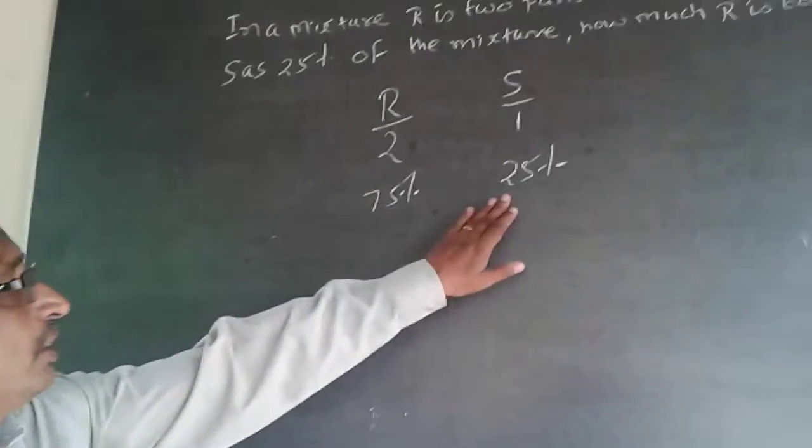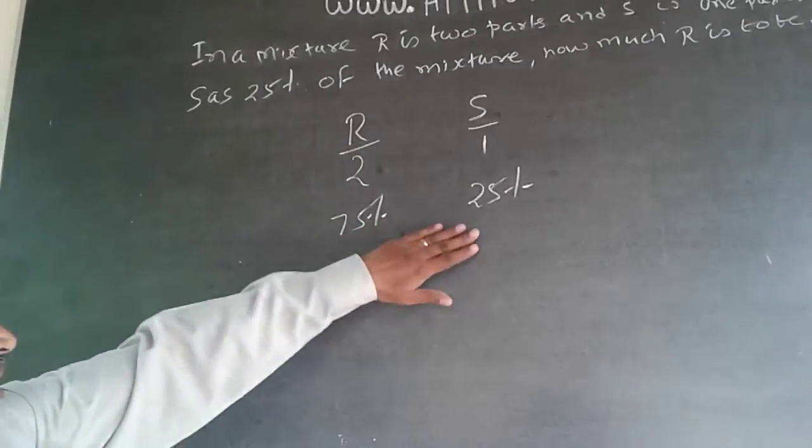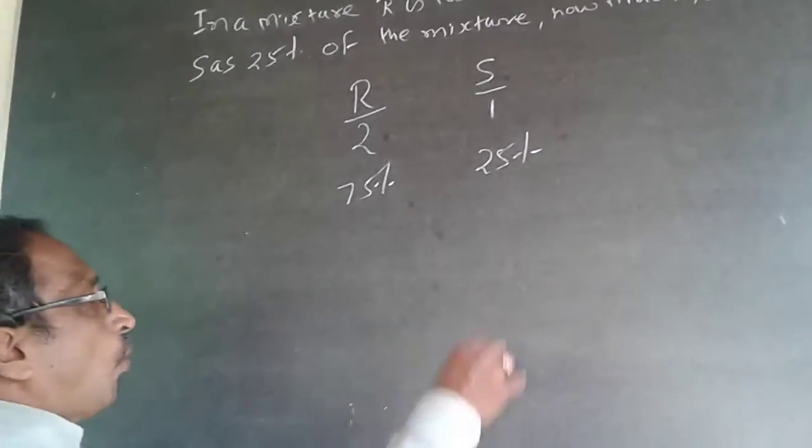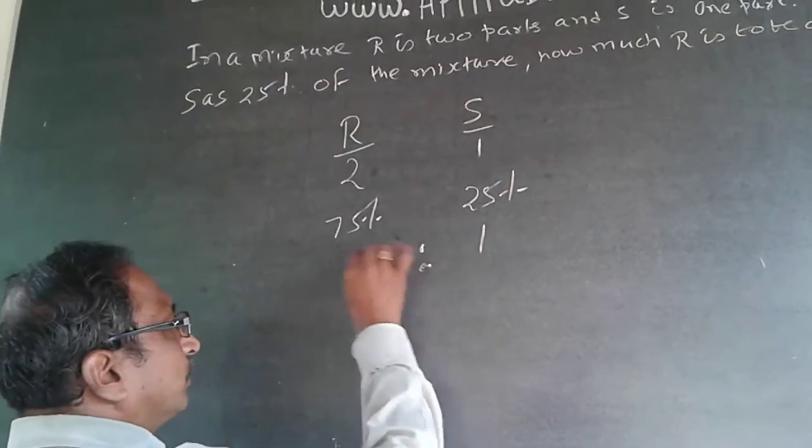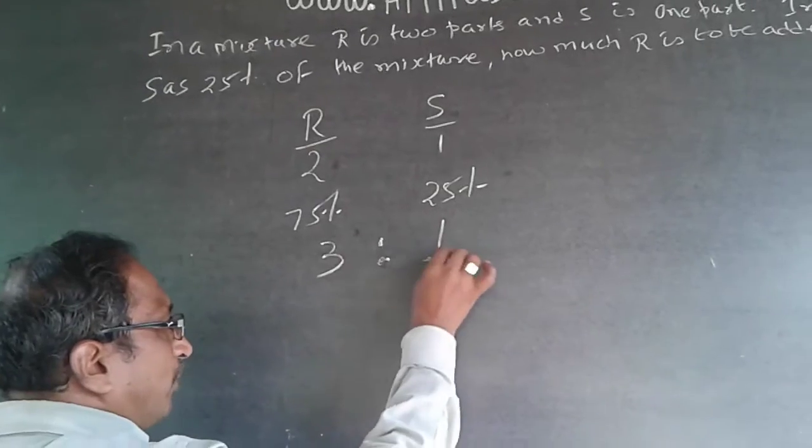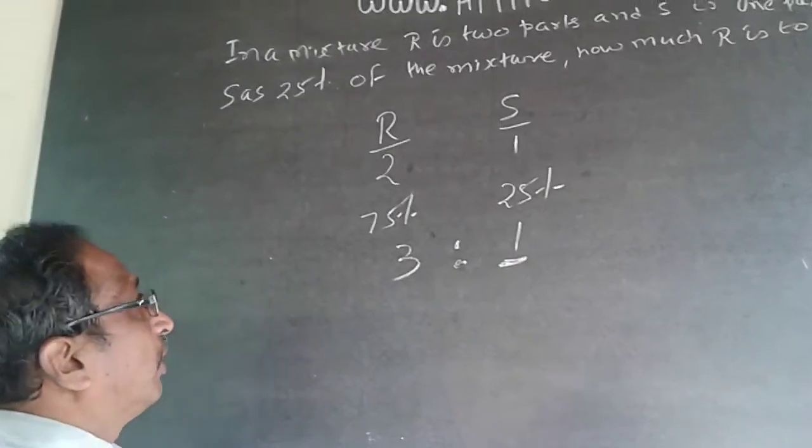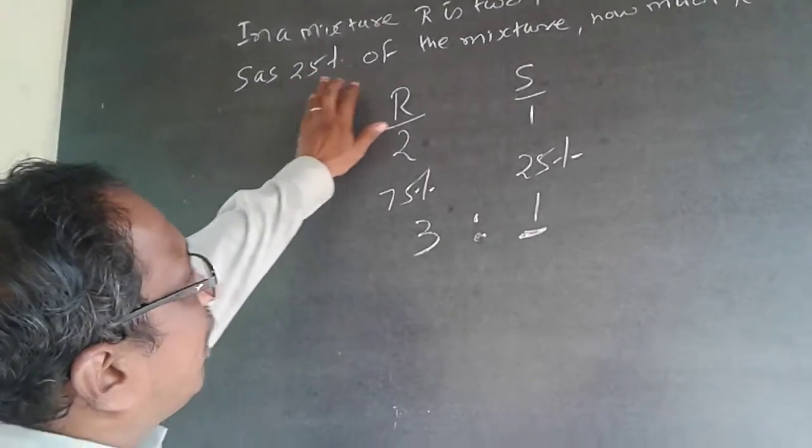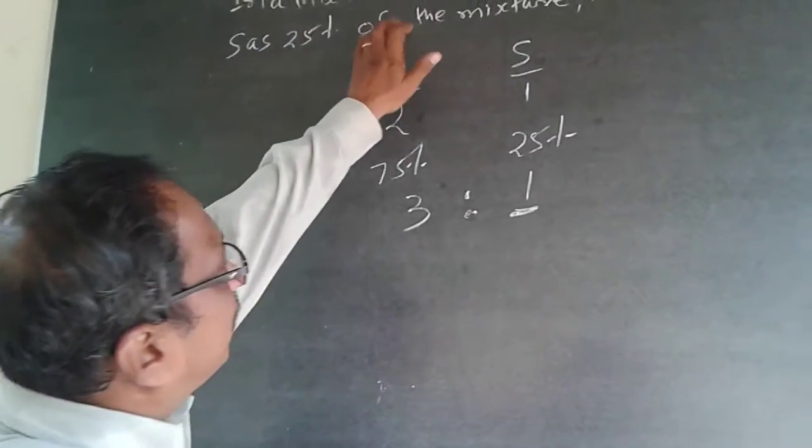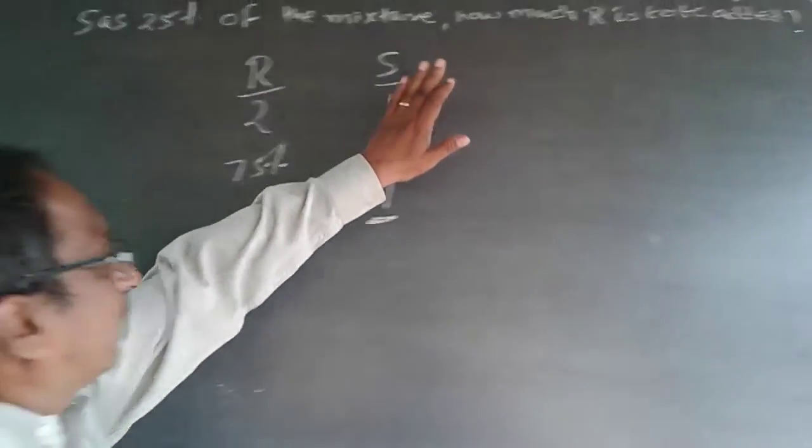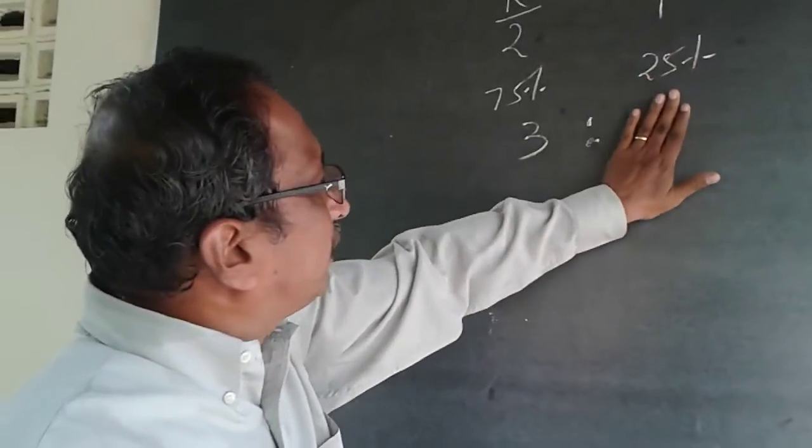Now the ratio is nothing but 1 is to 3. This S has to remain as is, this cannot be changed. S has to be retained as it, so the S cannot change.